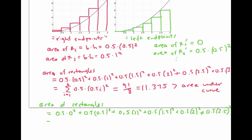One way to write this in sigma notation is with i ranging from one to six, using the base of 0.5, and the height given by 0.5 times (i minus one) squared. This works because when i is one, i minus one is zero, so we start with height zero, as we should. And when i is six, we get 0.5 times five, which is 2.5, just as we want. If we add up this sum, we get 55 eighths, which equals 6.875 — an underestimate for the true area under the curve.